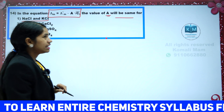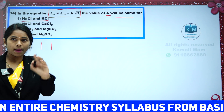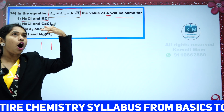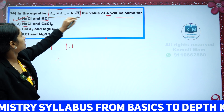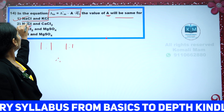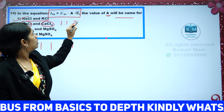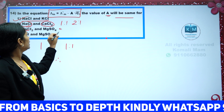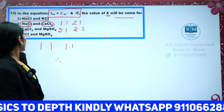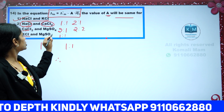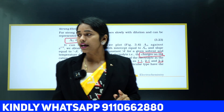Looking at option one: NaCl has Na⁺ (1) and Cl⁻ (1) — ratio 1:1. KCl has K⁺ (1) and Cl⁻ (1) — also 1:1. So NaCl and KCl have the same A value. CaCl₂ has Ca²⁺ (2) and Cl⁻ (1). MgSO₄ has Mg²⁺ (2) and SO₄²⁻ (2). So option 1 — NaCl and KCl — is the correct answer, as both are 1:1 type electrolytes.